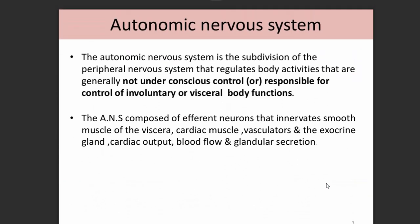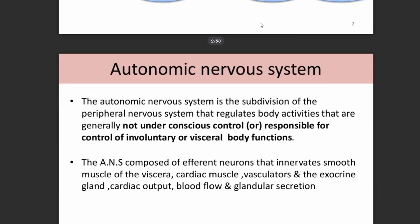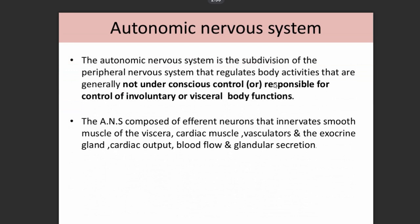The autonomic nervous system is a subdivision of the peripheral nervous system. It regulates body activities that are generally not under conscious control — meaning they are involuntary in nature — and controls visceral body functions.